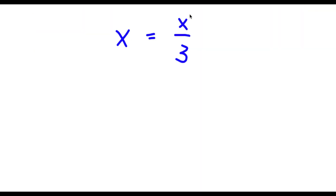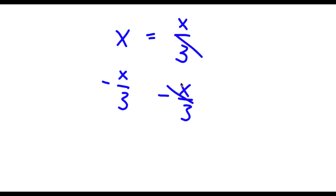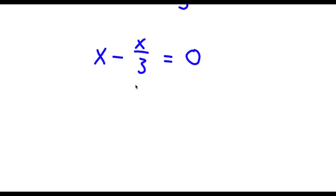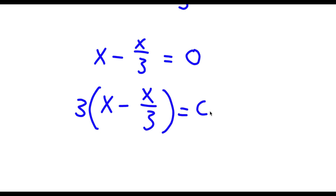Alright, so now I have x is equal to x over 3. The first thing I'm going to do is subtract x over 3 on both sides. These two are going to cancel out and now I'm left with x minus x over 3 is equal to 0. From here, I'm going to multiply both sides by 3, so I have 3 times x minus x over 3 is equal to 0.